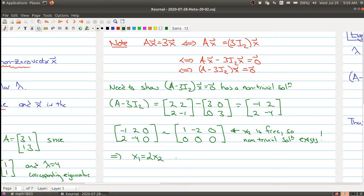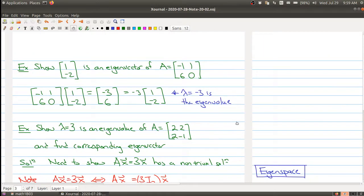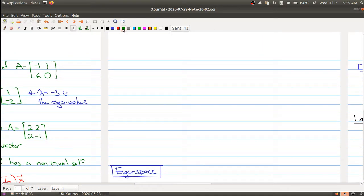So this means then that all solutions have the form. Let me just move up here so I have a little bit more room to finish up. So all the solutions will have the form [x₁; x₂] is equal to [2x₂; x₂].